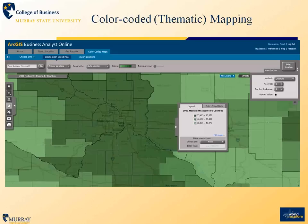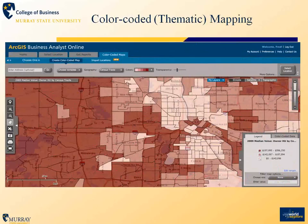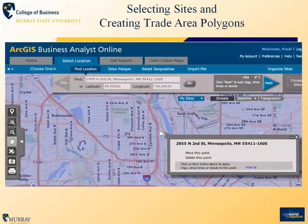The thematic map or color-coded map application is illustrated here. Note that we have already defined the study area and we are looking at median household income at the county level in the central Minnesota area. As we drill down and move in closer to the Minneapolis–St. Paul area, we are now looking at the distribution of median value of housing by census tract, which illustrates how we can zoom in more closely to get finer granularity and detail in the thematic mapping process.